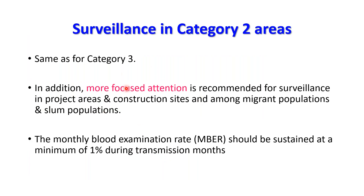In Category 2 areas, surveillance is conducted in the same way as Category 3, with additional focused attention on project areas, construction sites, migrant populations, and slum populations. The monthly blood examination rate is to be sustained at a minimum of 1% during the peak transmission months.